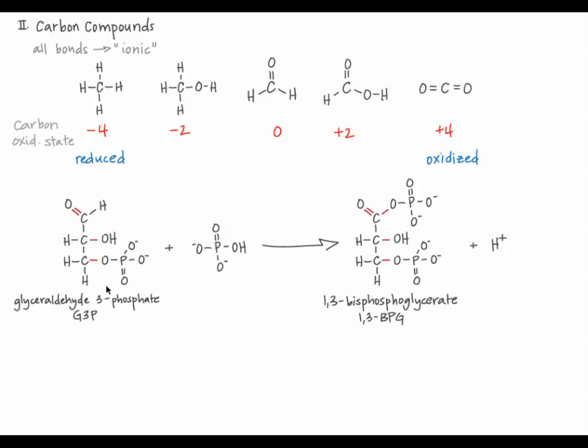Or we can simply count the bonds between carbon and oxygen to see that 1,3-BPG is more oxidized than G3P. In G3P, there are four bonds between carbon atoms and oxygen atoms. Whereas in 1,3-BPG, there are five bonds between carbon and oxygen. As a phosphate group was added, G3P was oxidized to 1,3-BPG.